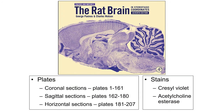For the rat brain there's a really nice atlas of stereotaxic coordinates. Normally this book is available in the lab, but you can also access an electronic copy with your institutional login — that's what we'll use today. The book is divided into coronal, sagittal, and horizontal sections through the whole rat brain. The stains used are either cresyl violet or acetylcholinesterase — we will only use the cresyl violet stain in this course.